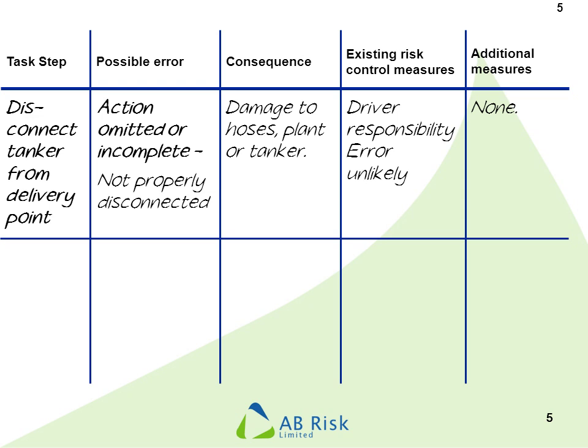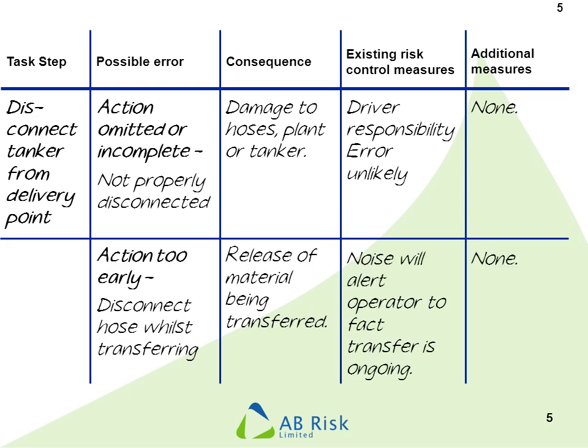But we had other error types. If we look at the action too early — disconnecting the hose while we're still transferring — we're going to get a release of material. There's still liquid passing through the hose, and that's likely to leak when we go and disconnect it. As an existing risk control measure, there's going to be noise and might even be vibration, so it seems fairly unlikely that the operator will do that without realising something's amiss. Again, we might say in this case there are no additional measures we would consider.